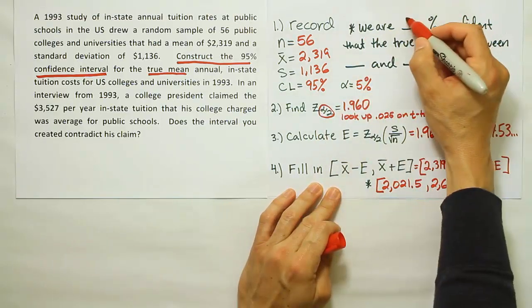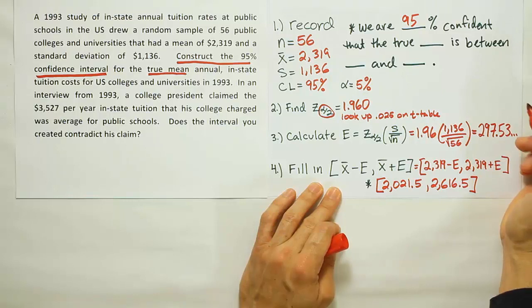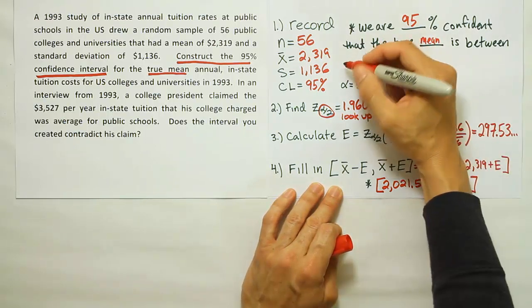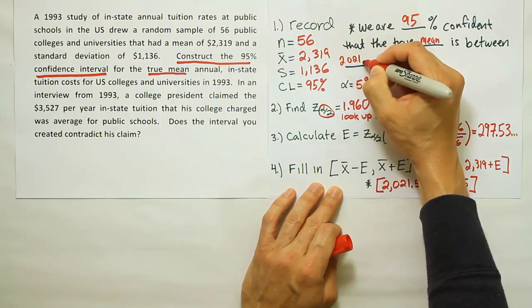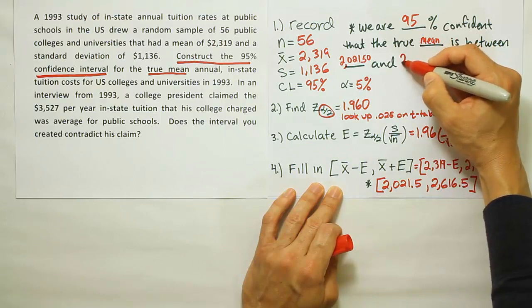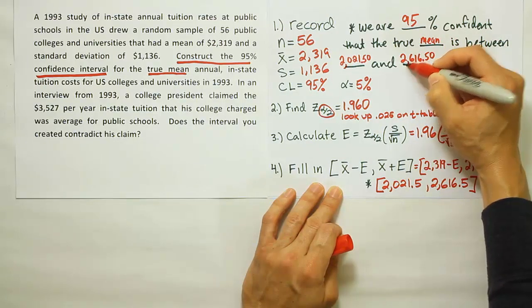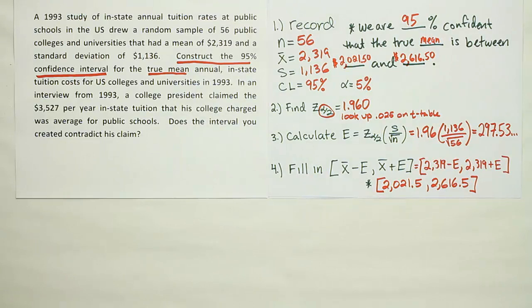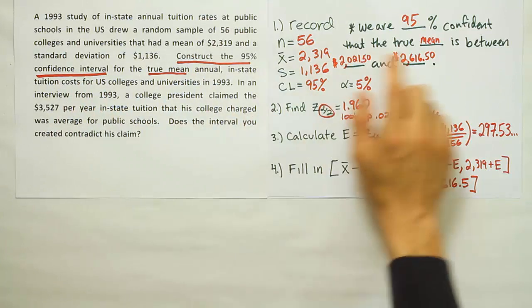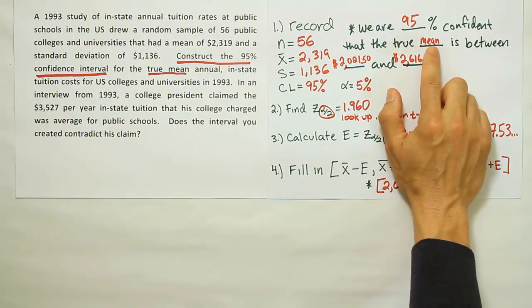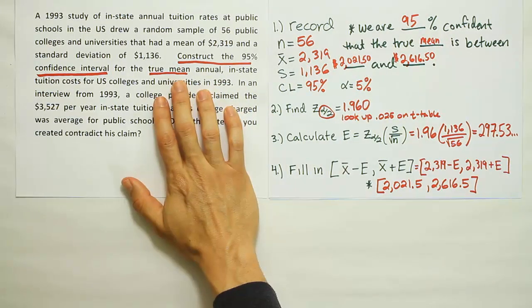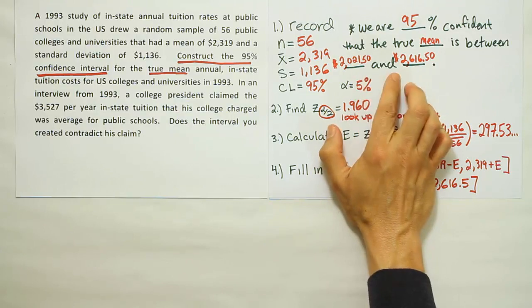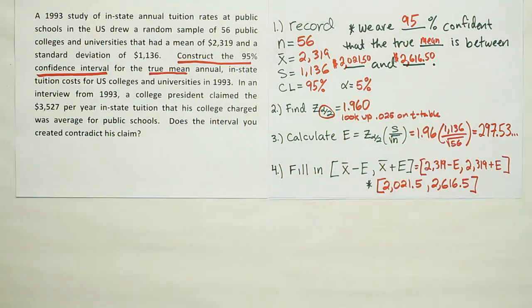Our confidence level - we are 95 percent confident that the true mean is between, and in this case, we're going to put in these numbers, is between $2,021.50 up to $2,616.50. These are dollar amounts. You can throw in the dollar symbol if you want to. But essentially what we're looking at here is this is the true mean annual in-state tuition cost. You could have said the true mean annual in-state tuition cost, but as long as you wrote the mean, people can refer back to the problem to see what mean we're talking about. So this is the interval in which we think that the true mean lies. The true average should be somewhere between these two numbers. We're 95 percent confident of that.